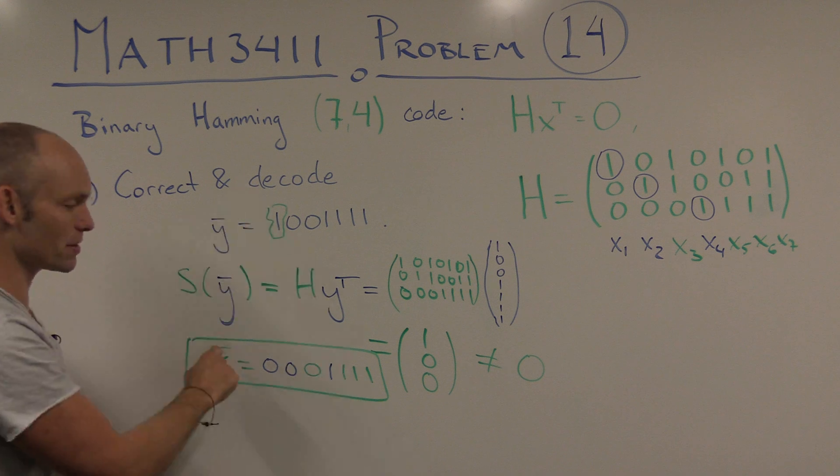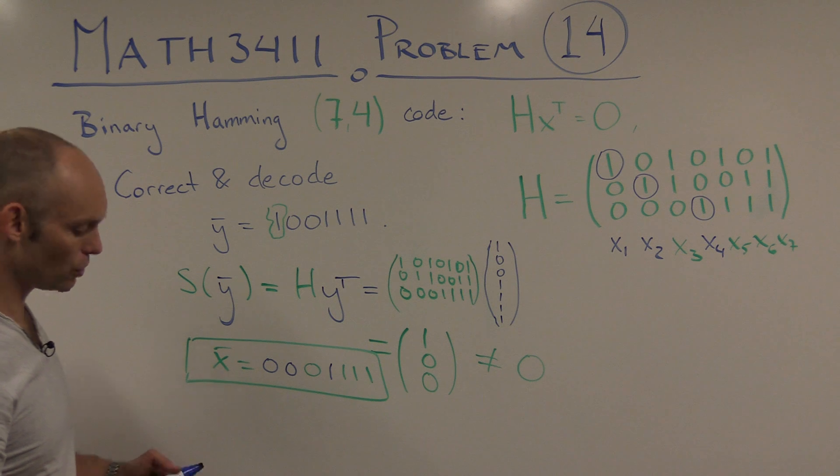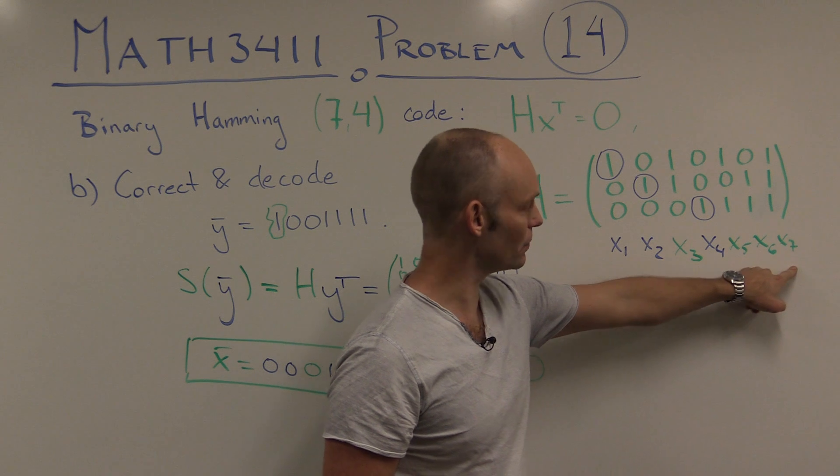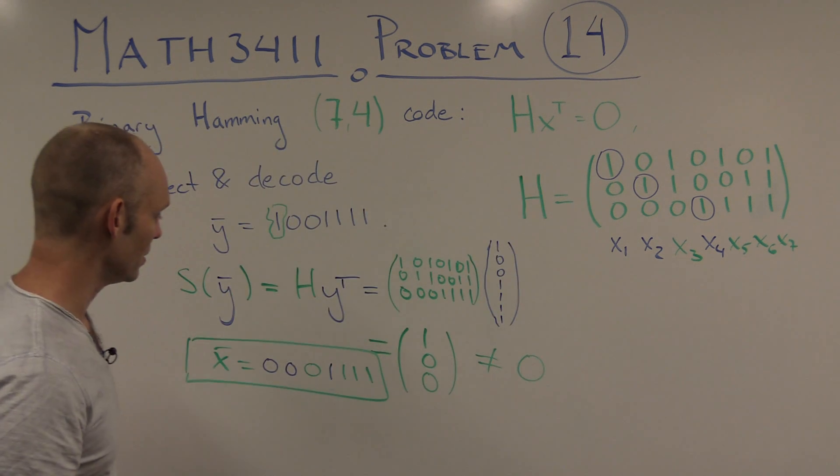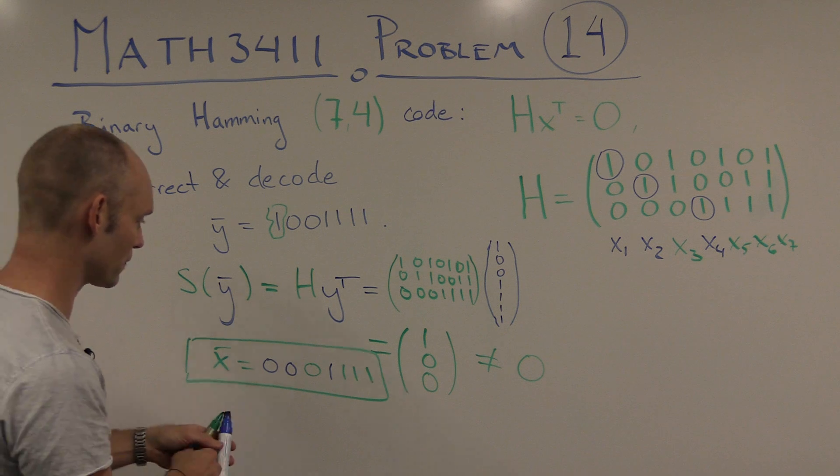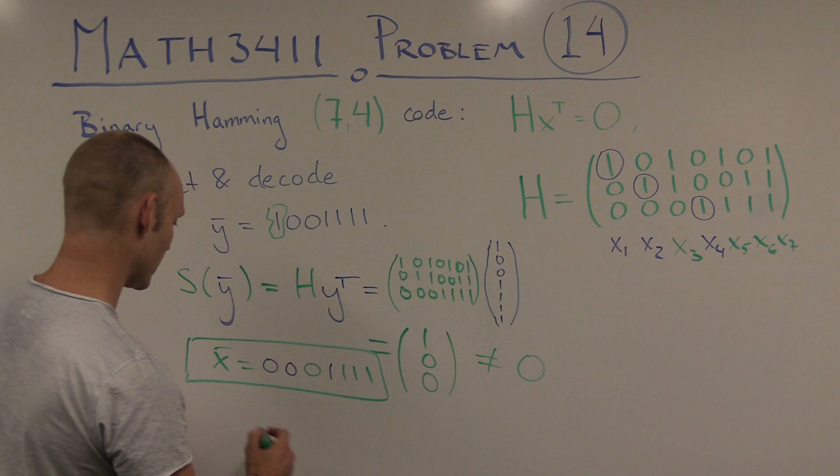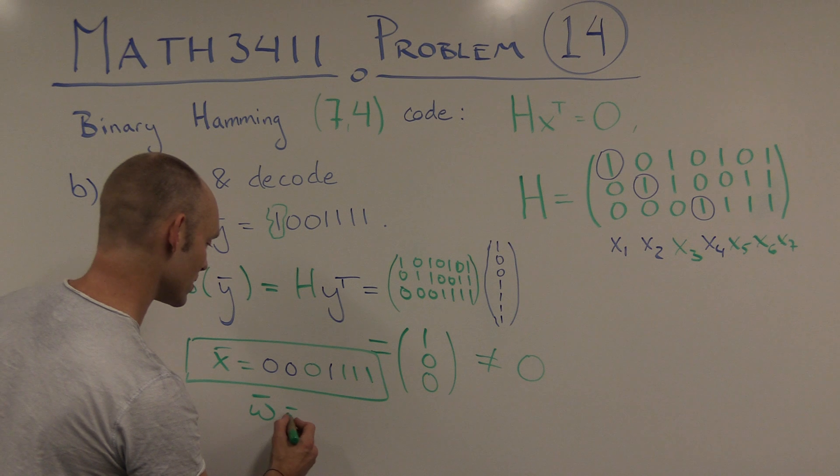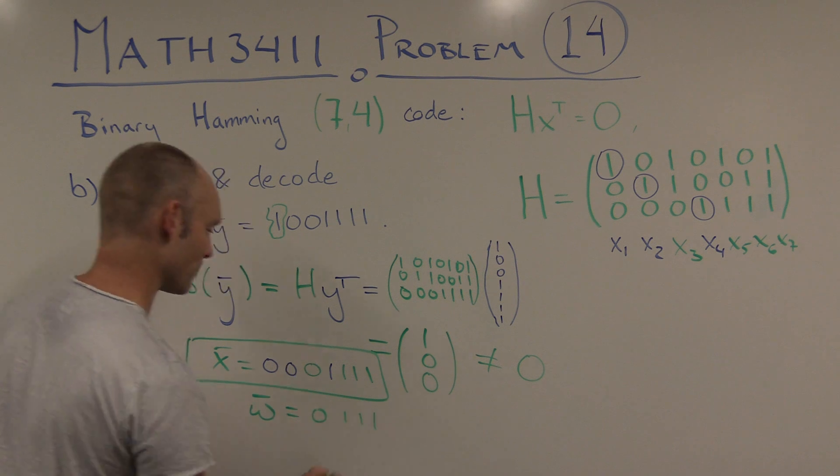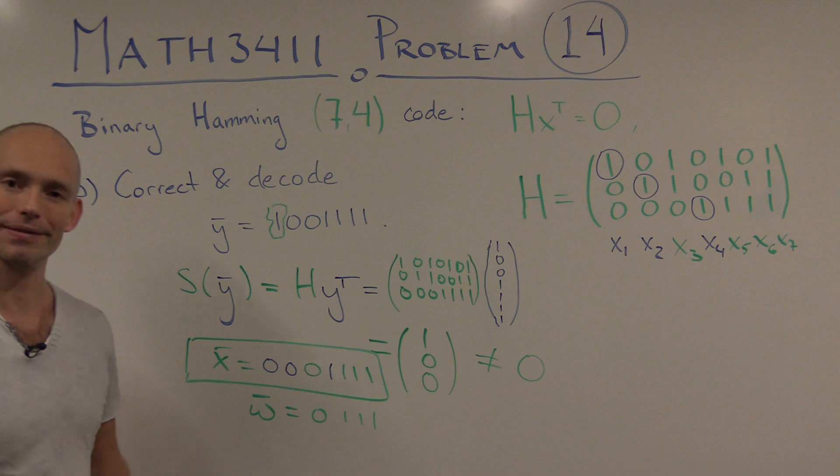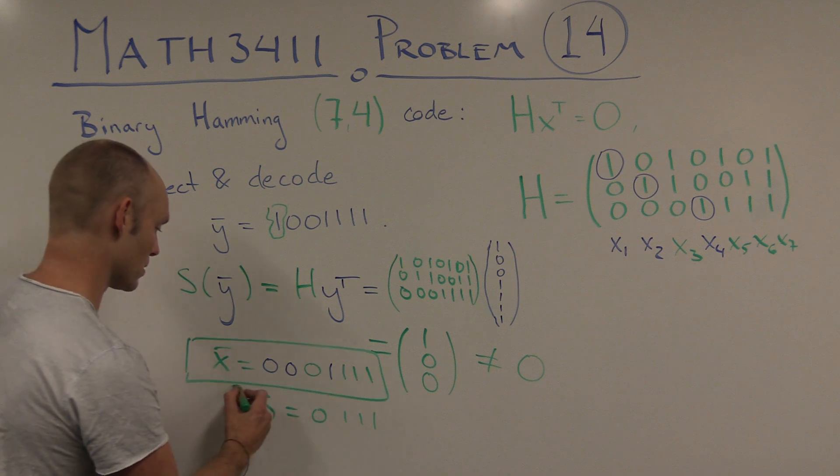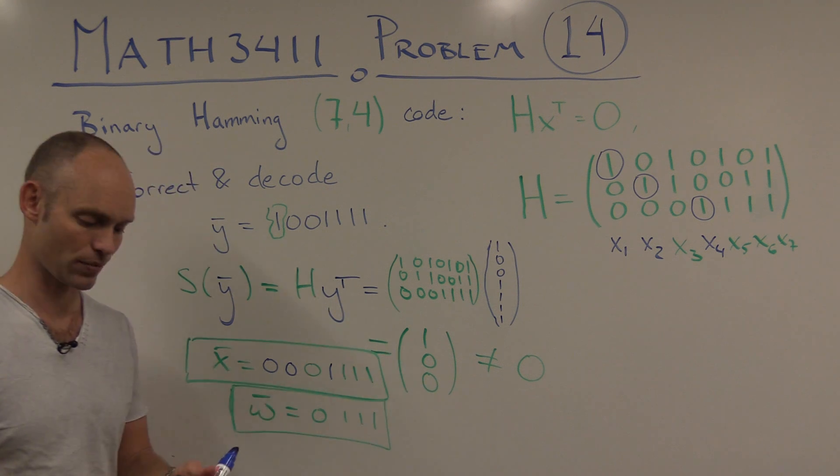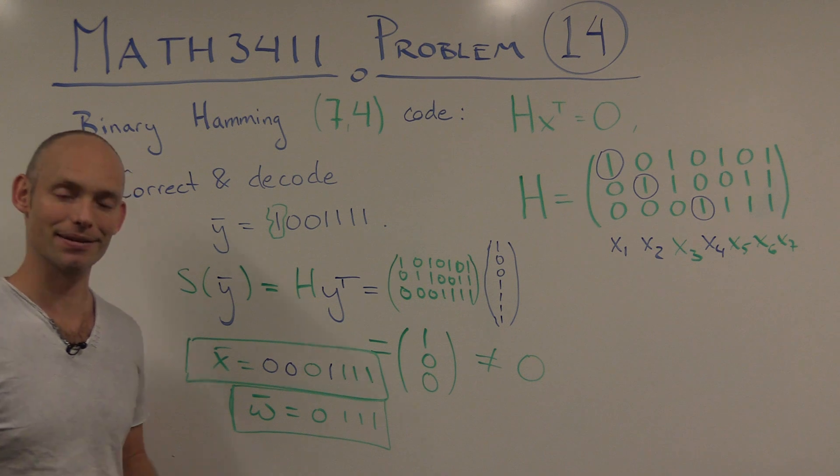So this is the corrected code word. There was one error right in the first bit. Okay, we also have to decode this code word. And that's very easy. All we have to do is look at the information bits, x3, 5, 6, and 7, these green ones, if you can see that, and just extract them. Okay, so we have these green ones here, 0, 1, 1, 1. So the decoded message is just 0, 1, 1, 1. So we just ignore the 0, 0, 1 check bits. And this is hopefully our original message that was transmitted, or encoded and transmitted.